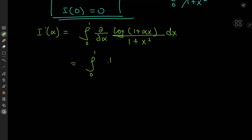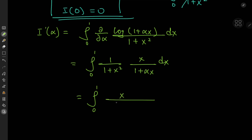Because of that, we have the integral from zero to one of the partial derivative with respect to alpha of log(1 + αx) divided by 1+x² dx. Since we're differentiating partially with respect to alpha, the 1/(1+x²) term is held constant. The derivative of the logarithm is the reciprocal of its argument, and the derivative of (1+αx) with respect to alpha is x. So now we have the modified integrand: x divided by (1+αx) divided by (1+x²) dx — that is dI/dα.